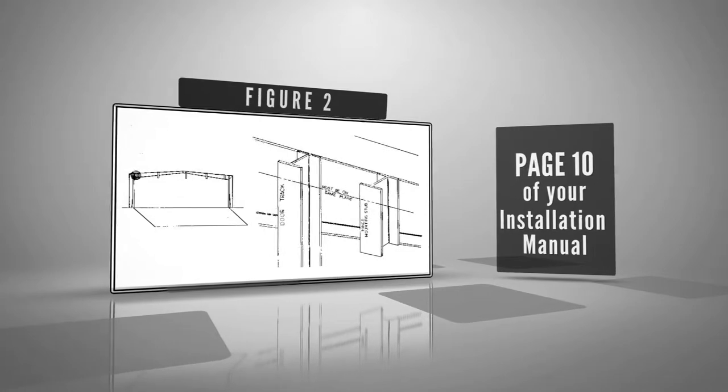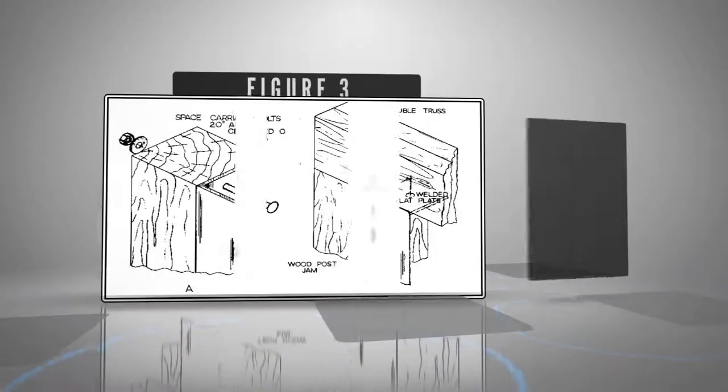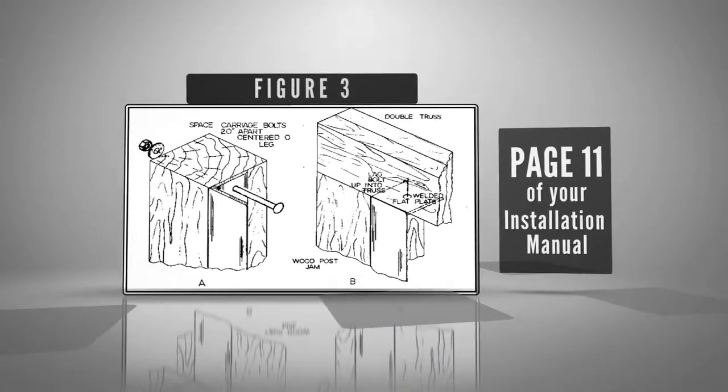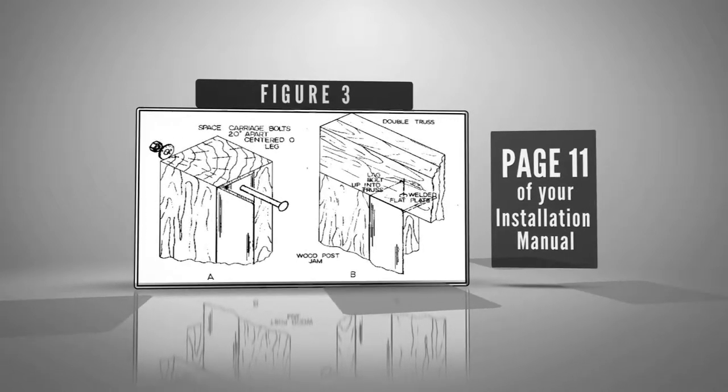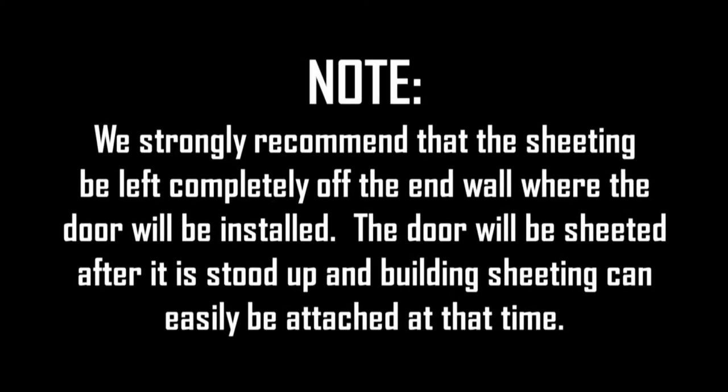If the jam track is to receive an angle iron, be sure it's set flush and tight up to header. If attaching angle to wood, do not use lag bolts. Use only carriage bolts on 20-inch centers. See Figure 3, page 11. Note: We strongly recommend that the sheeting be left completely off the end wall where door will be installed. The door will be sheeted after it's stood up and building sheeting can easily be attached at that time.